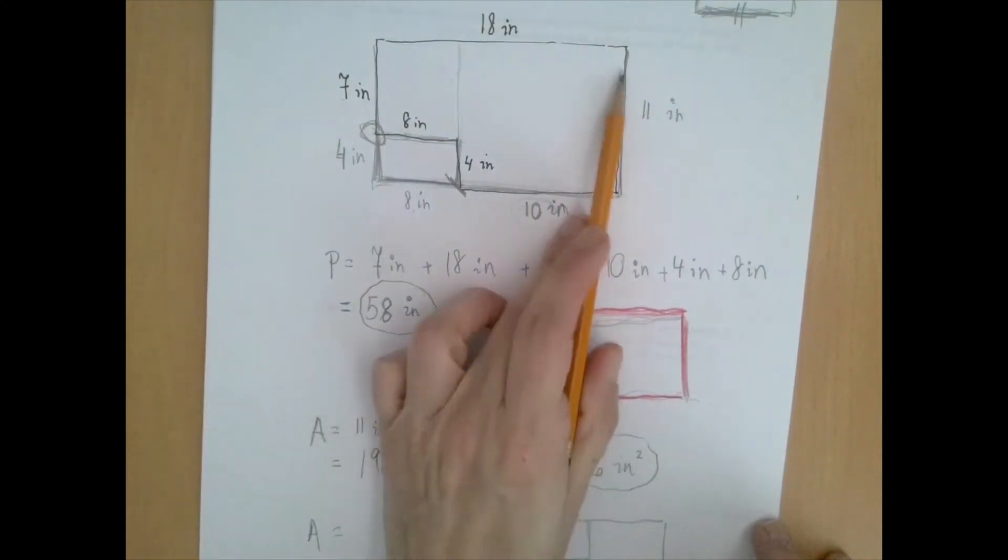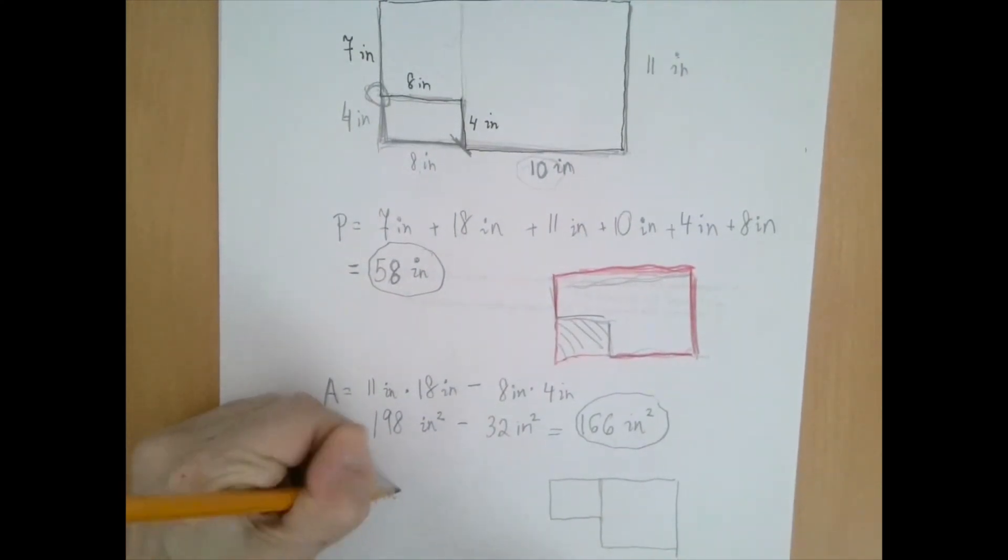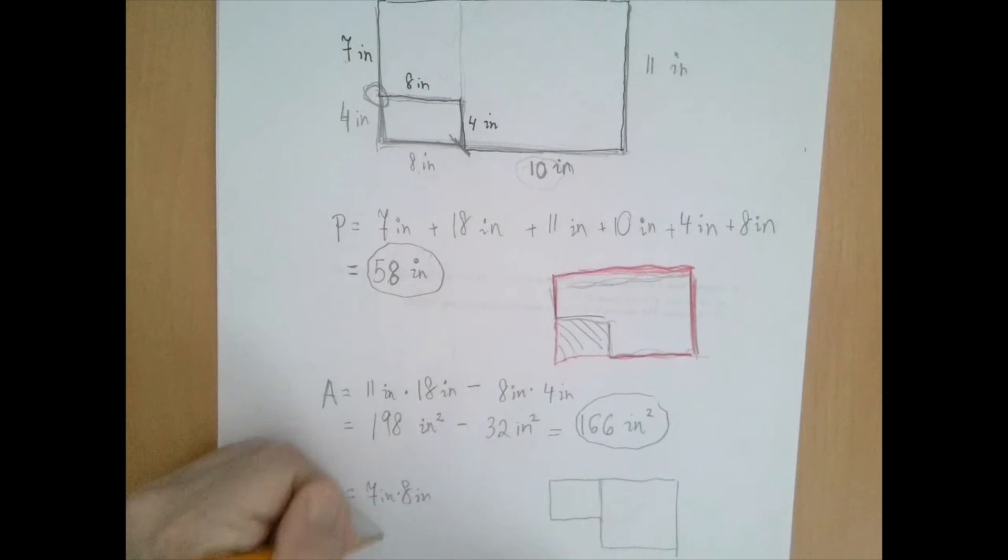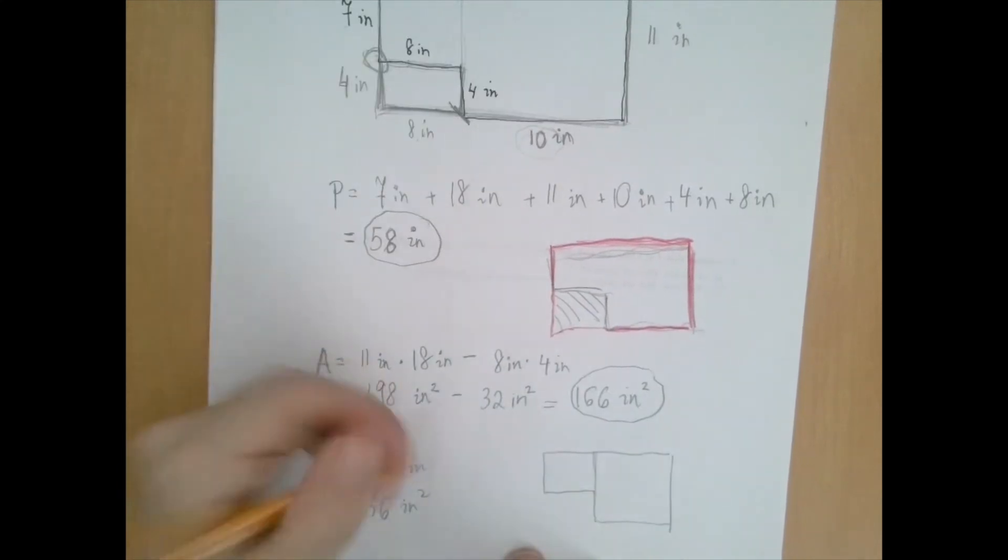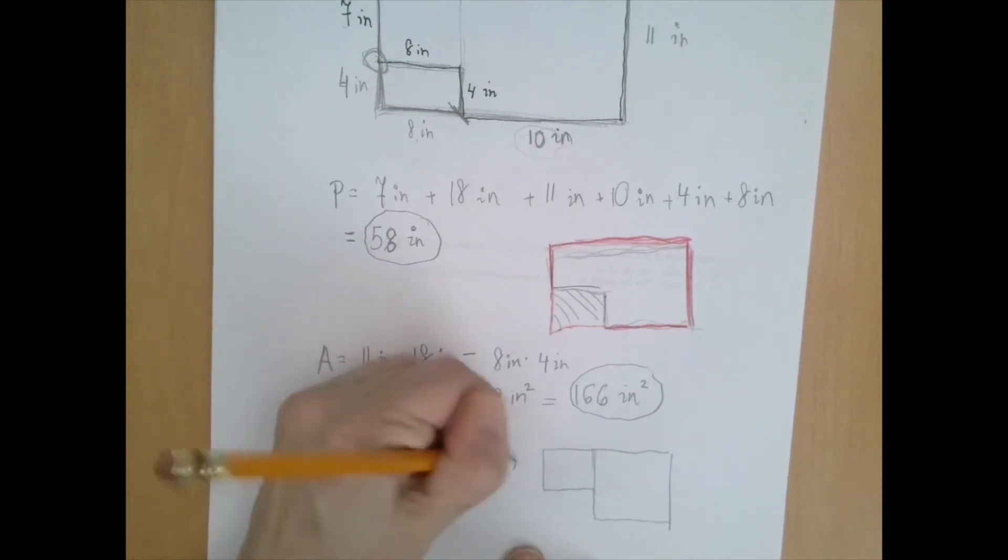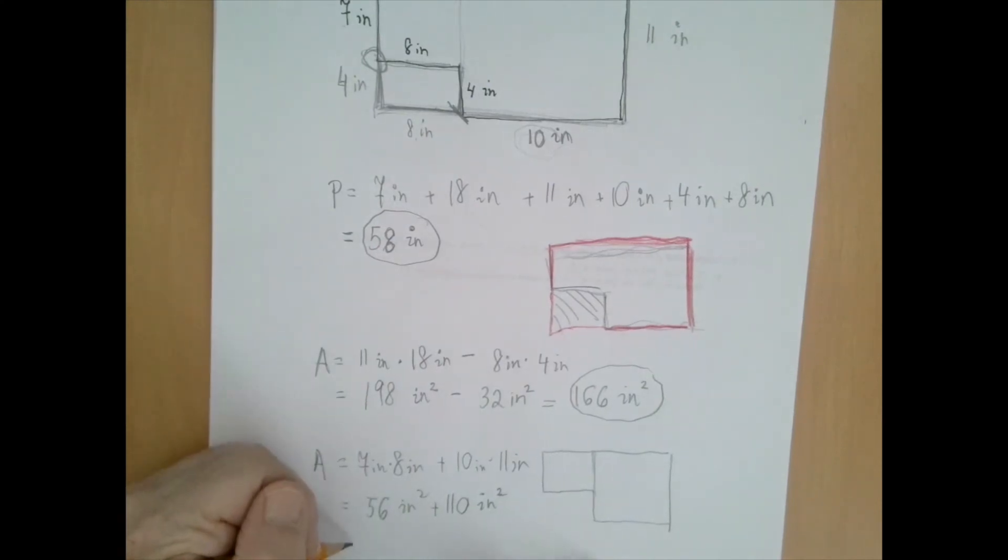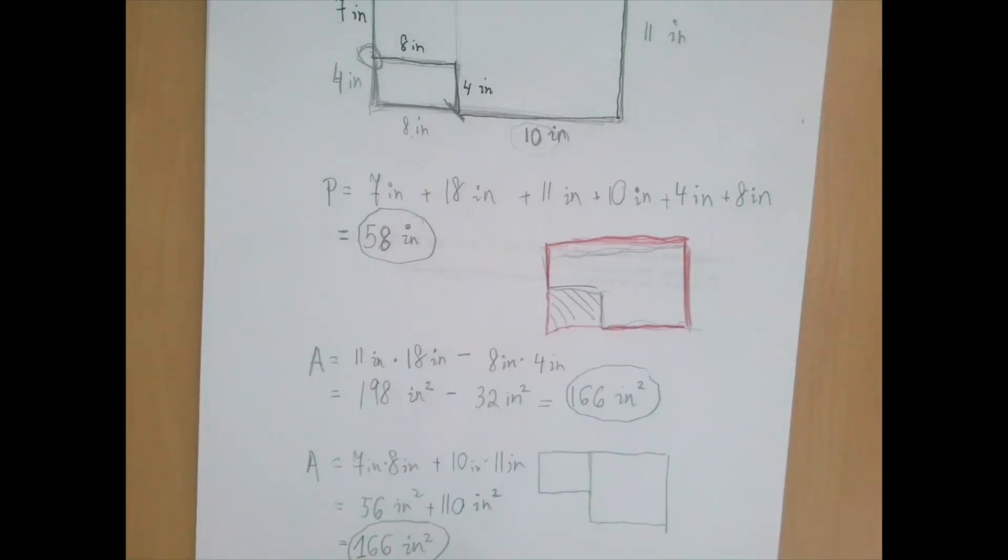So the full area would be 7 inches by 8 inches, which is 56 square inches, plus 10 by 11. So that's 10 inches by 11 inches, which is 110 square inches. And that gives us the same 166 square inches. Thank you for watching.